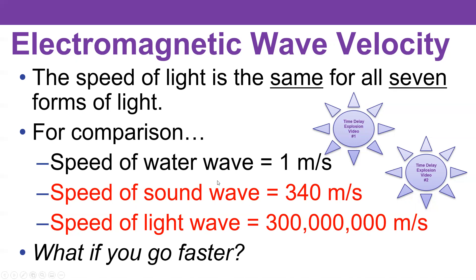Our fathers and grandfathers told us that if there was a one-second time delay between when you see the light and hear the thunder, that the lightning strike was one mile away. But it turns out that it was far closer than that — it's one-fifth of a mile. So if you see lightning and then hear the thunder five seconds later, then it's one mile.